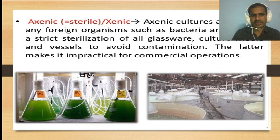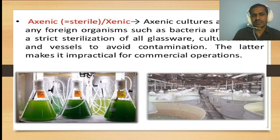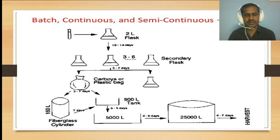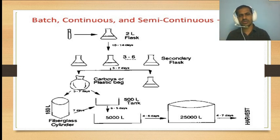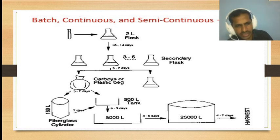Axenic culture, or sterile culture, excludes foreign organisms such as bacteria. Strict sterilization of glassware and vessels is done to avoid contamination, though this makes it impractical for commercial production operations. In batch culture, a mother plant culture is maintained. From the mother plant it is converted into conical flasks, and from conical flasks it can be converted into large plastic bags and cultivated in a bioreactor.